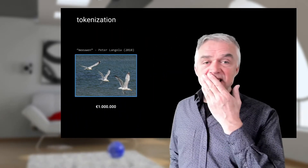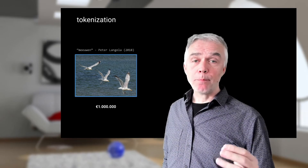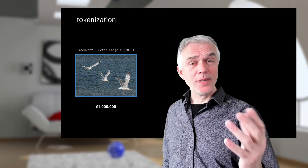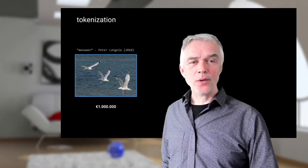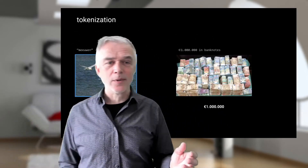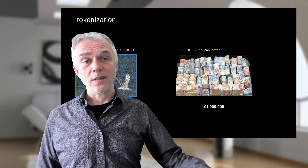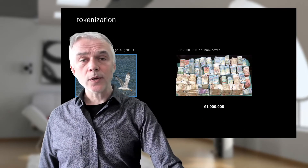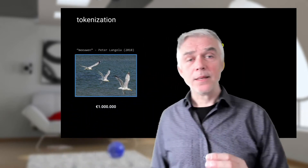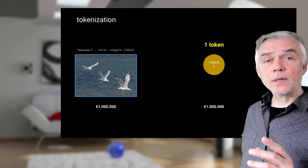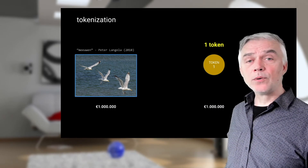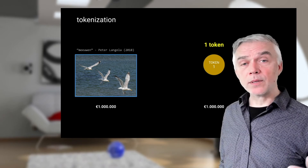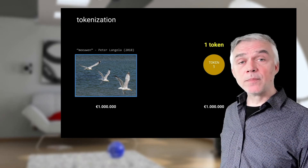As an example of tokenization: assume we have a very valuable painting worth 1 million euro. Carrying 1 million euro in cash is not easy and not safe when buying or selling artwork. What you can do is represent the asset — in this case the artwork — with one token, and that token carries the value of 1 million euro. You can store the token in a secure wallet and transfer it like a Bitcoin. With the transfer of the token, you transfer the ownership of the artwork.